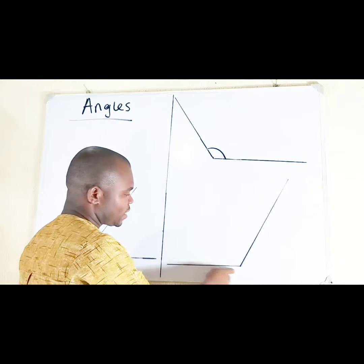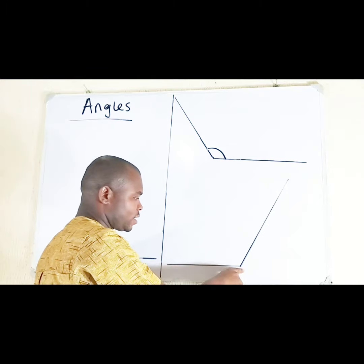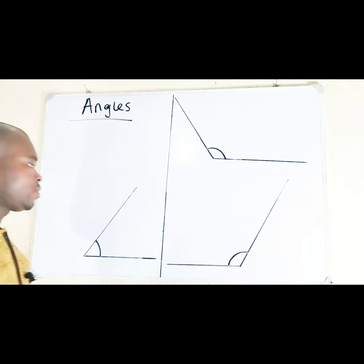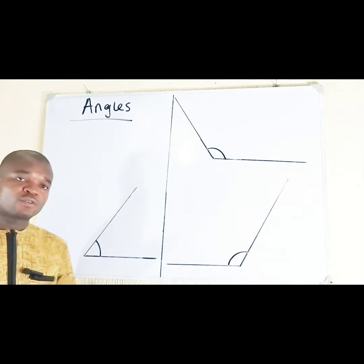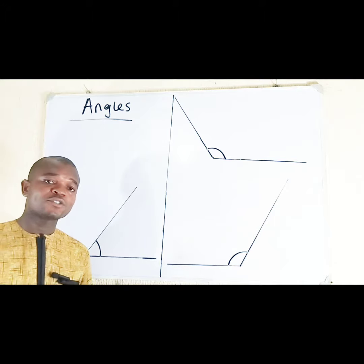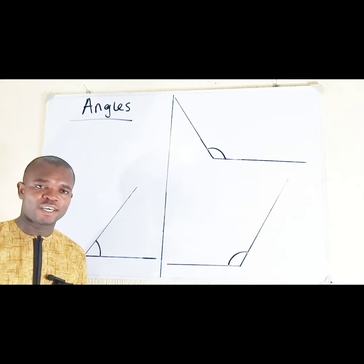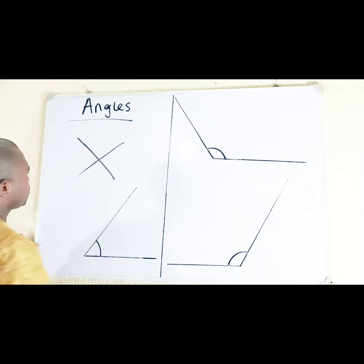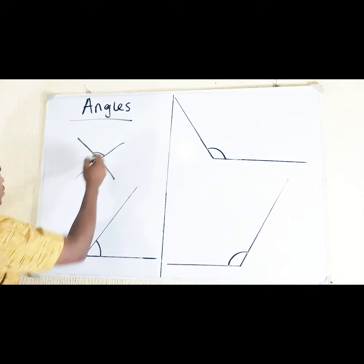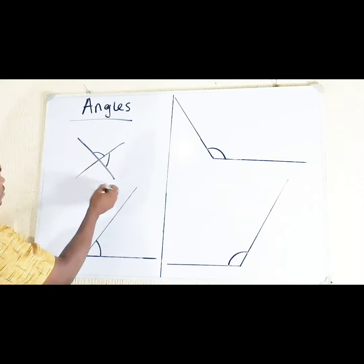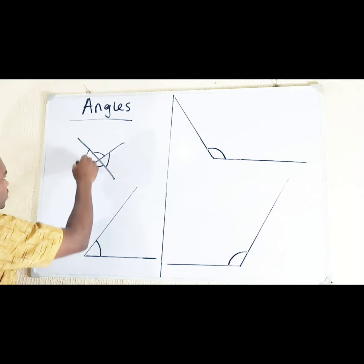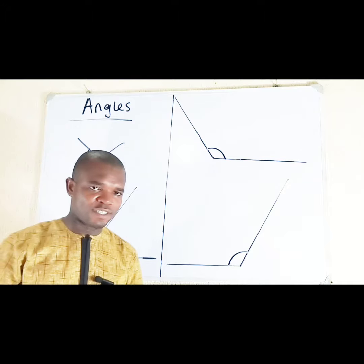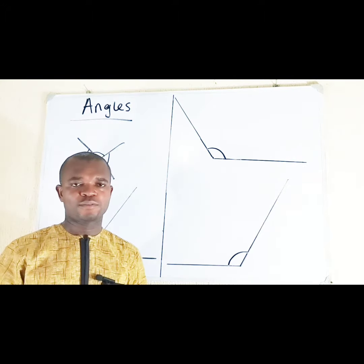This line and this line, they meet each other here. An angle is formed. Not only these examples — whenever two lines meet each other, an angle is formed. This is an angle. This one is an angle. This one is an angle. This one is an angle. So whenever two lines meet each other, an angle is formed.